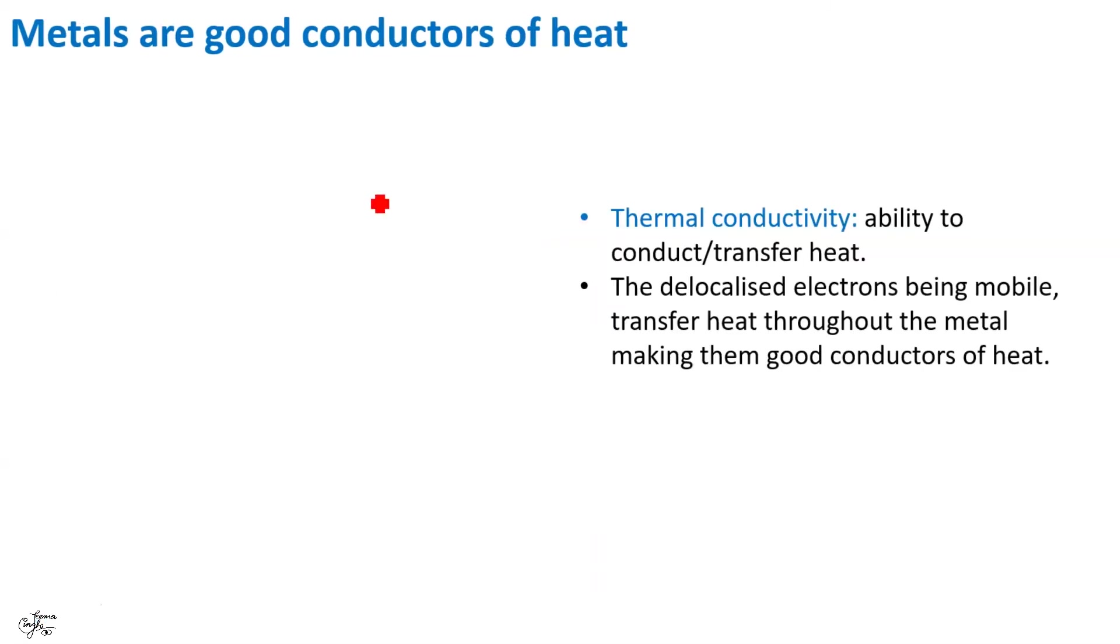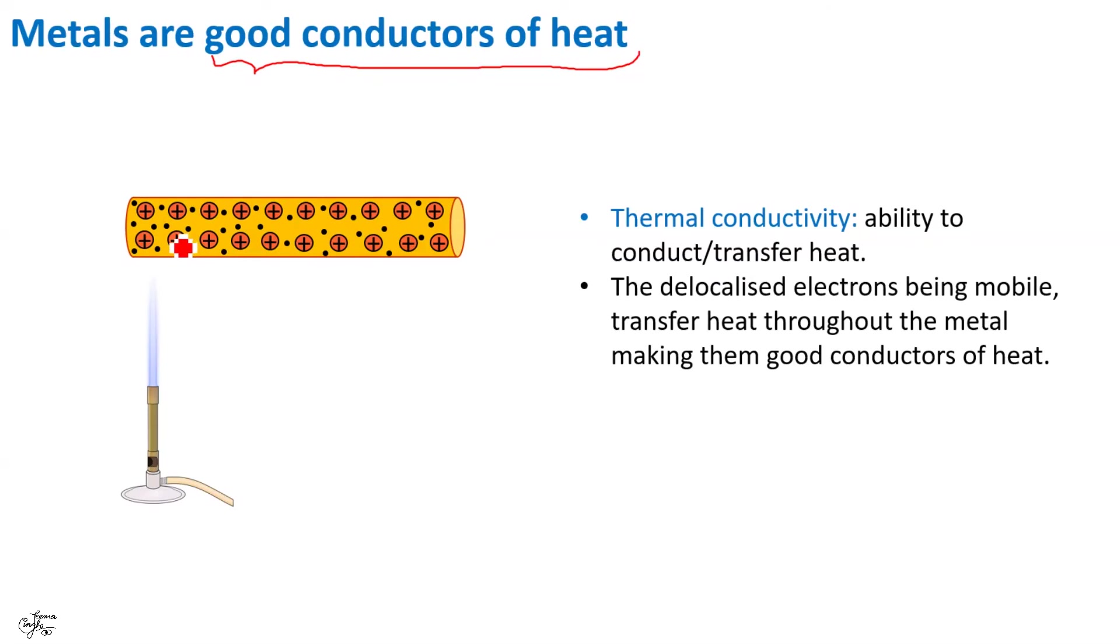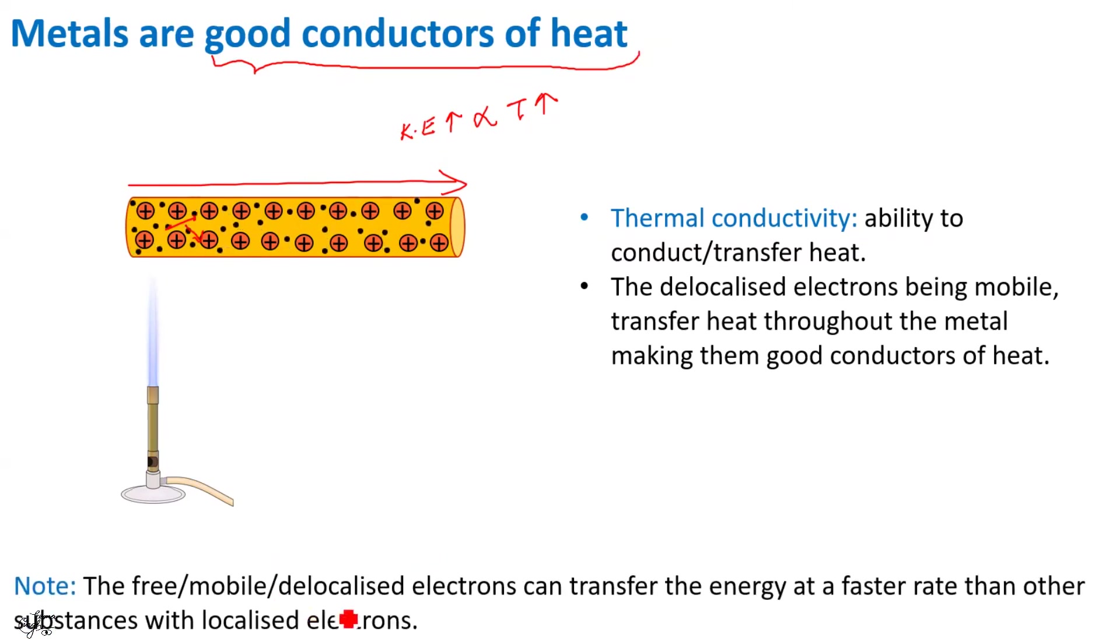The same mobile electrons are responsible for making metals good conductors of heat also. The thermal conductivity of a material is its ability to conduct or transfer heat. When one end of a metal is heated, the electrons in that particular area start vibrating faster. Their kinetic energy increases because kinetic energy is directly proportional to temperature. The electrons start moving faster and collide with each other. During these collisions, they transfer their energy to other electrons. Thus, the heat is transferred from one end to the other end. And so, metals are generally good conductors of heat. Remember, the delocalized electrons can transfer the energy at a faster rate as compared to substances with localized electrons because these electrons are free to move.